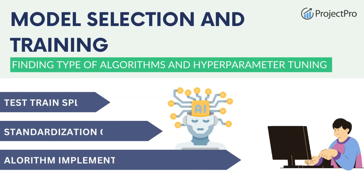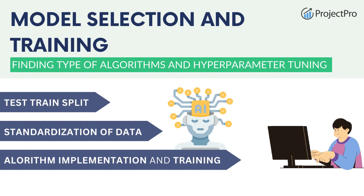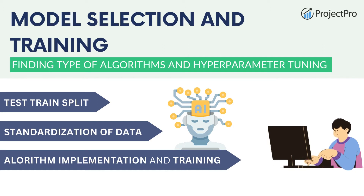The next part is model selection and training. When our data is complete and ready, we split it into test and training sets, and standardize the data if required. We then choose the machine learning models suited to our problem. Since we want to detect fraud — yes or no — this is a binary classification problem, so we only use classifiers in this machine learning project.